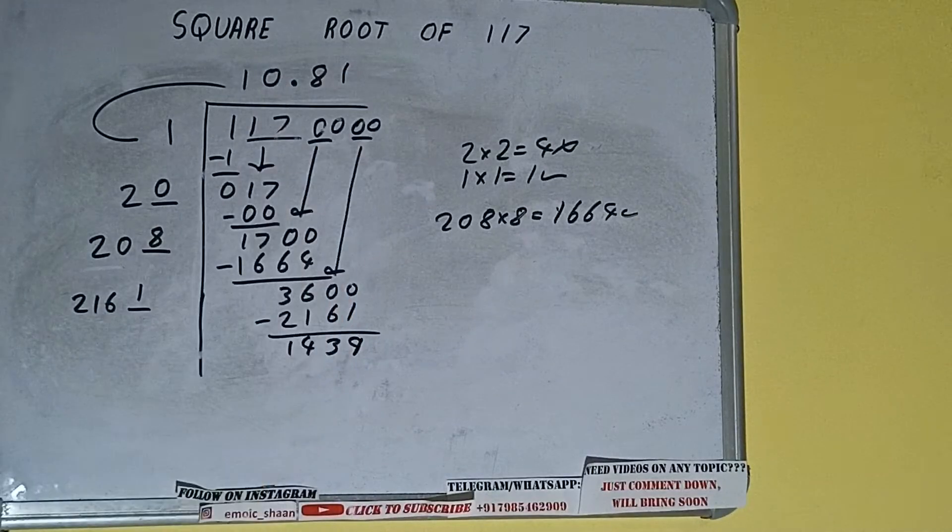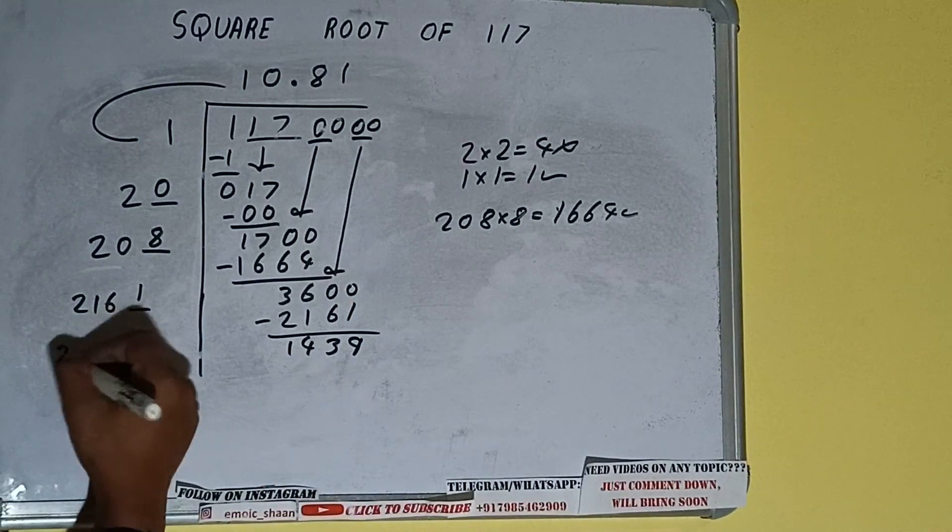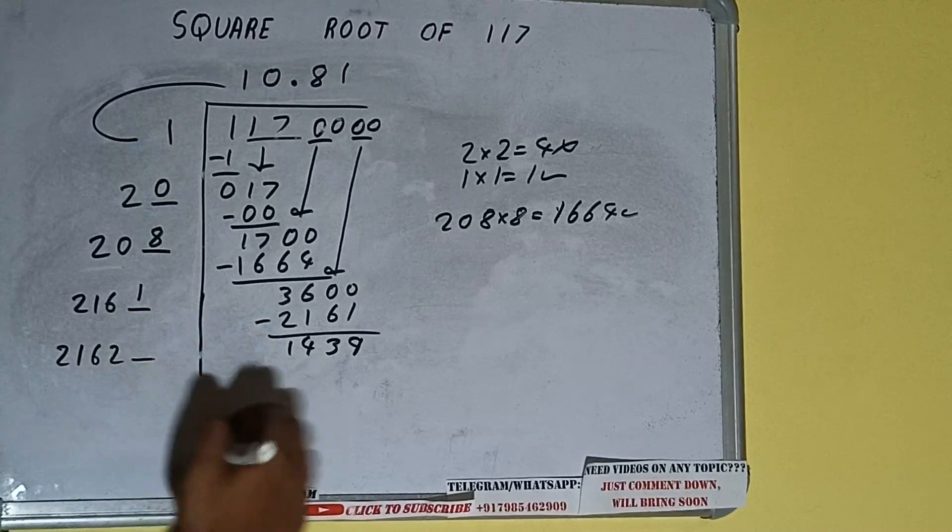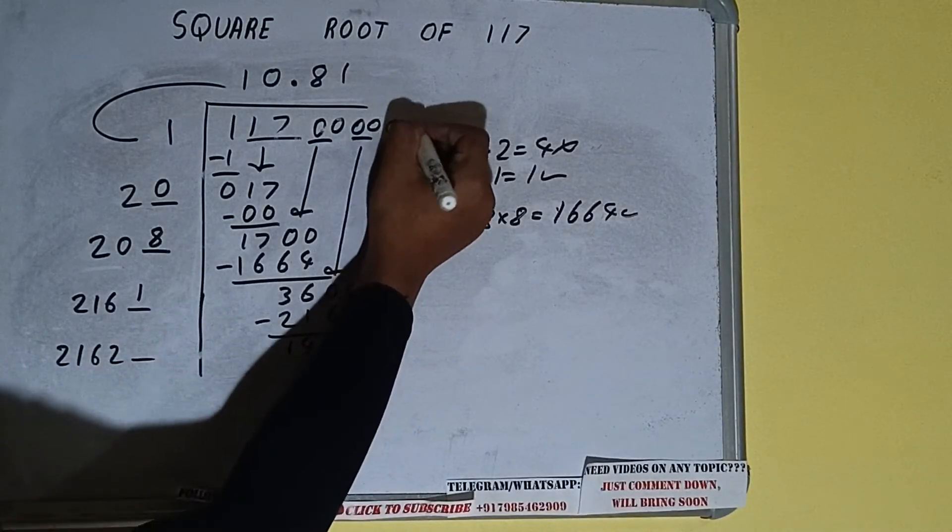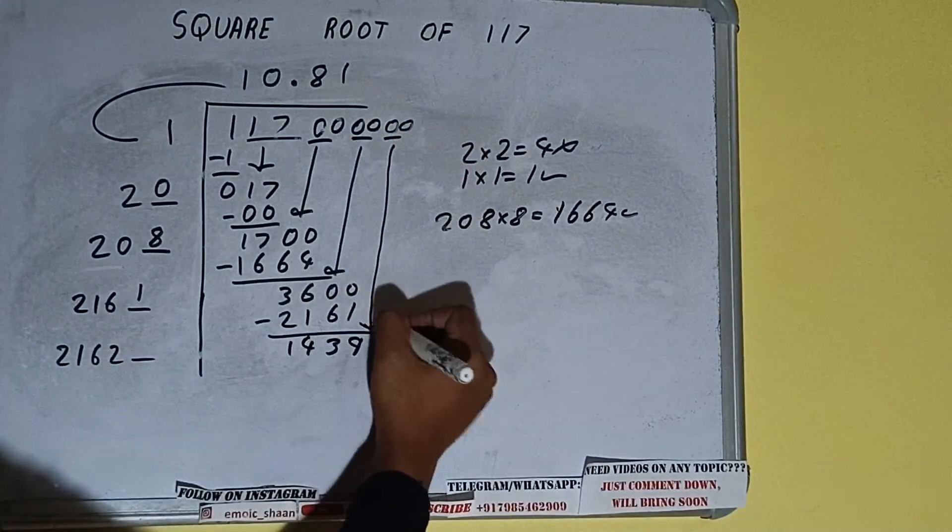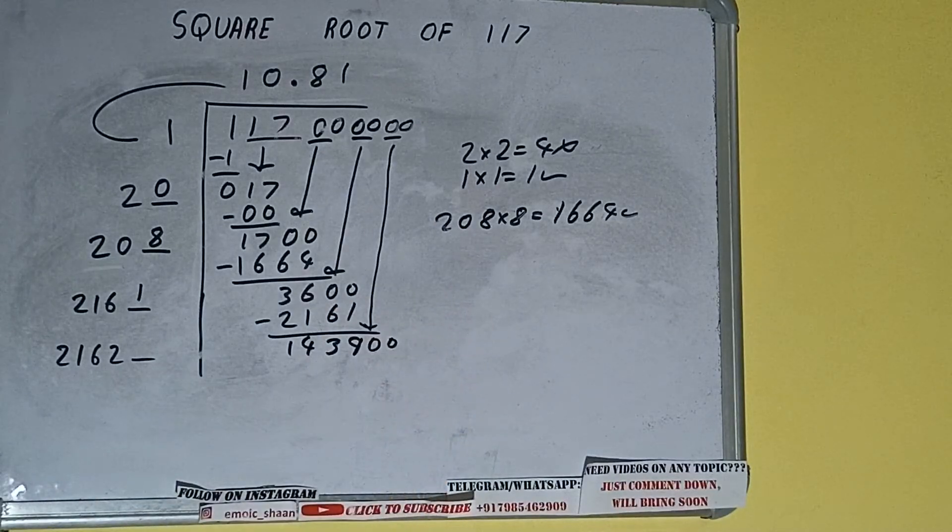Now 2161 into 1 we did, so add both. So 2161 plus 1 will be 2162 and 1 digit extra. And this number we need to make it big. So bring the next pair of zeros down and it will be 143900.